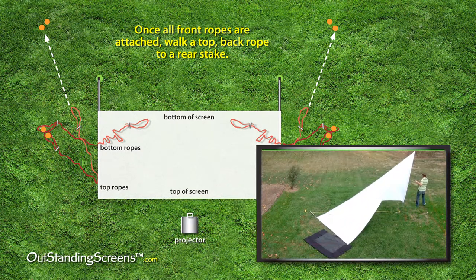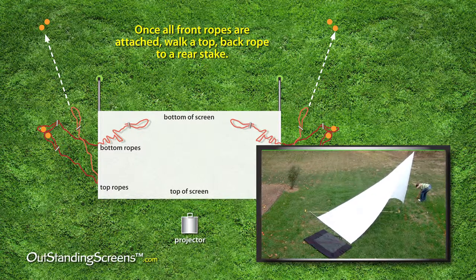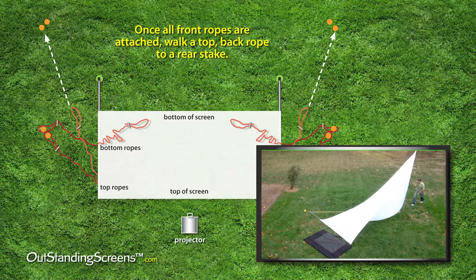Take the top back rope that is laying on the screen and walk it back to a rear stake and loop it on. Do the same at both ends if you're working alone.